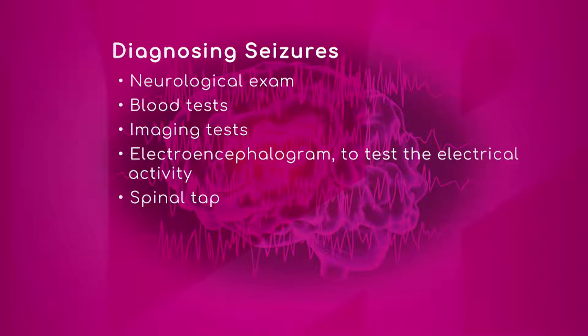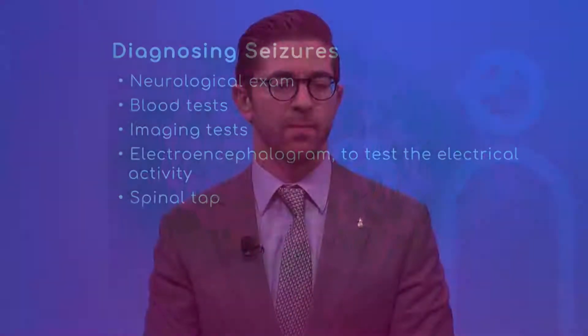Prolactin is a hormone that the brain produces that can sometimes be elevated after a seizure — again, just an adjunctive kind of test. Imaging tests: MRI could indicate a lesion in the brain, a tumor, or a stroke that could be causing the seizure. There are also more sophisticated imaging tests where we measure brain activity using SPECT analysis, looking at metabolism within certain parts of the brain to identify a seizure focus.